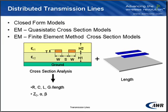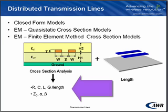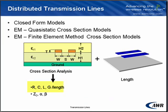All of the models have in common that we are getting propagation constants for the transmission line in the cross section of the line and then multiplying by the length to get the final transmission line model. So what we're solving for in all these models is the resistance, capacitance, inductance, and conductance per unit length. From these, you can derive the characteristic impedance and propagation constant for the line.